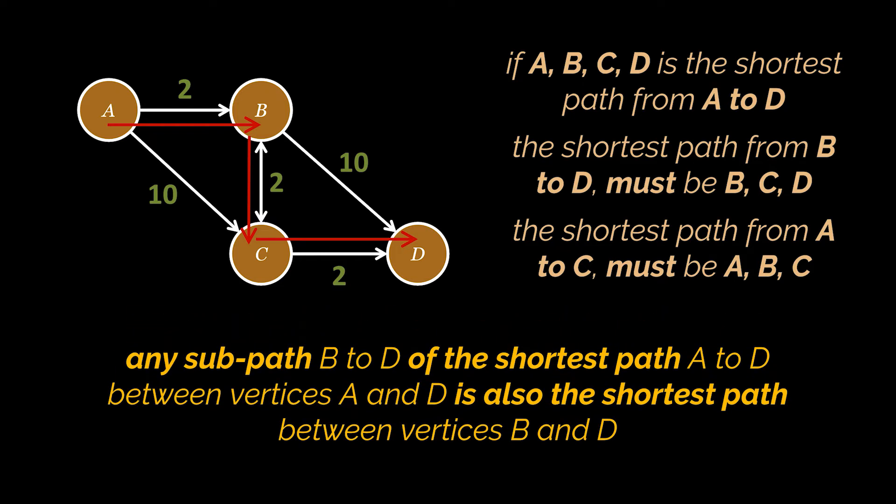In other terms, any sub-path B to D of the shortest path A to D between vertices A and D is also the shortest path between vertices B and D. Dijkstra uses this property to backtrack the shortest path in the opposite direction after overestimating the distance of each vertex from the given starting vertex.